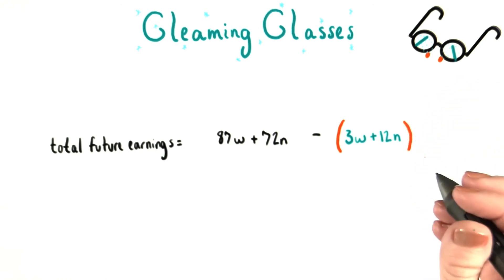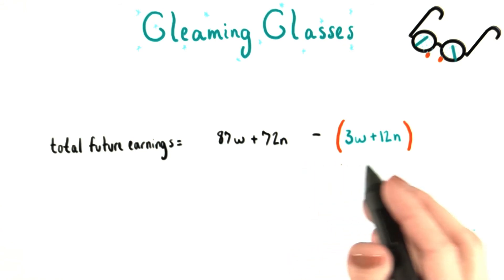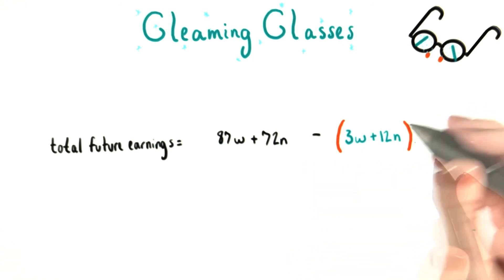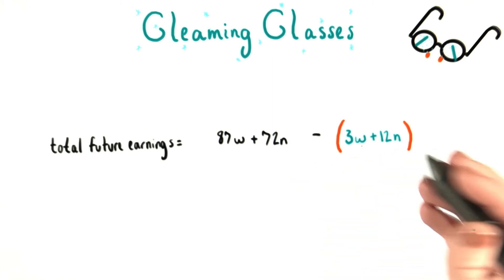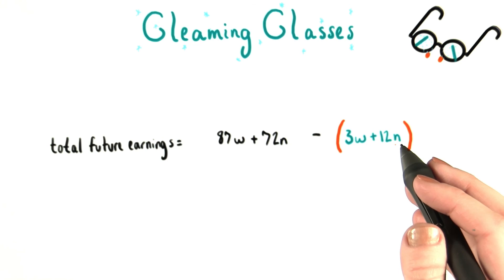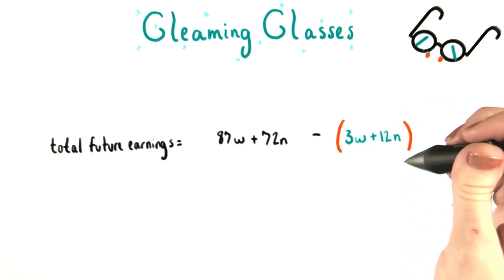Now the reason we need to do that is because we know that we want to subtract the entire amount of money that Grant would have earned from the orders that are now cancelled. So to show that this is one quantity, one sum of money, the money he would have earned from the wipers and the nozzles, we put parentheses around it.